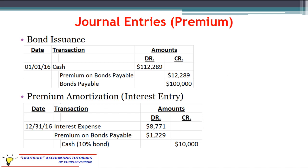Now let's take a look at the journal entries. Even though we've covered bond issuance in another module, I want to bring it back here with a real live example just to refresh and clarify why the entries are as they are. In this case we are talking about a premium bond. When we issued the bond we would debit cash for the purchase price — in this case $112,289. The bonds payable will be credited for the actual par value, which is $100,000.